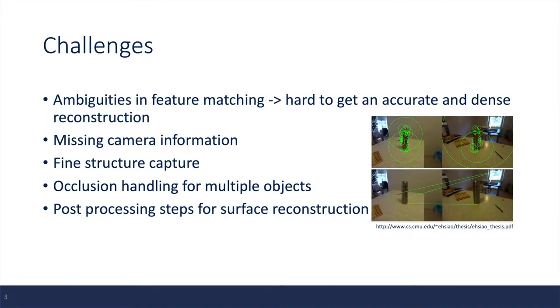In order to produce accurate 3D surface reconstruction, there are many different challenges we need to solve. For example, feature matching is used by many different algorithms to match up the same object in different images. However, feature matching can have many ambiguities as seen in the image on the right.